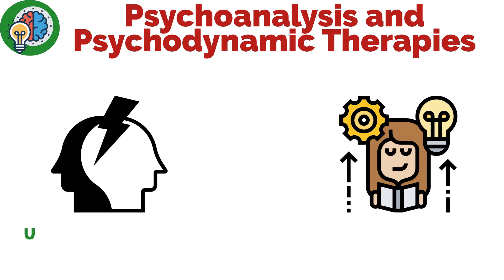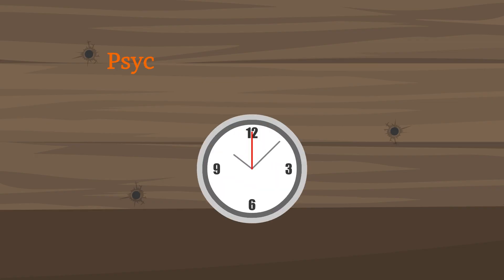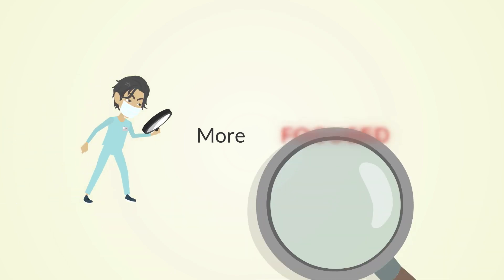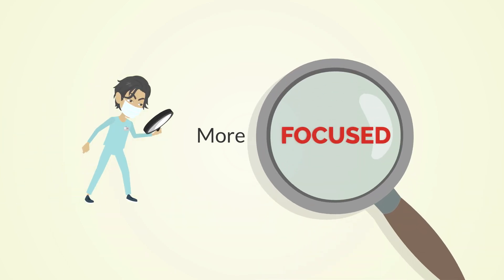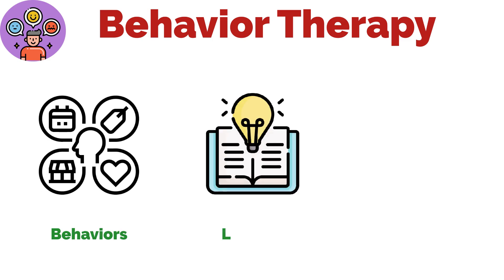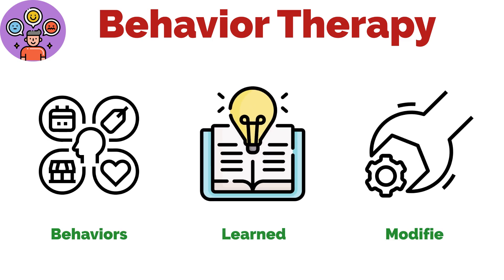The goal is to resolve unconscious conflicts and improve self-understanding. Psychodynamic therapy is a shorter-term variant that applies similar principles but with a more focused approach. Behavior therapy is based on the principle that behaviors are learned and can be modified.